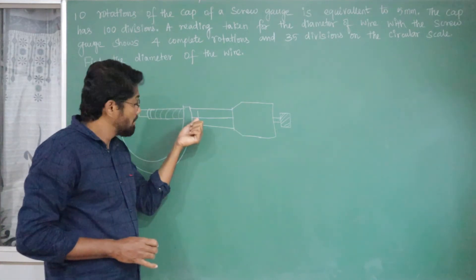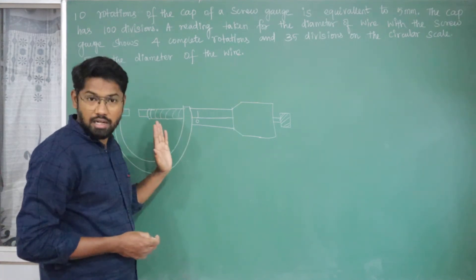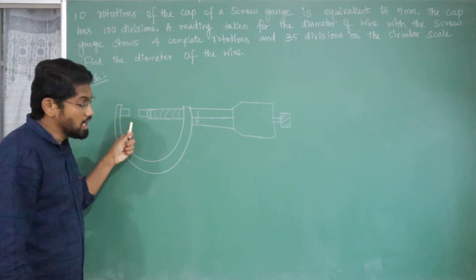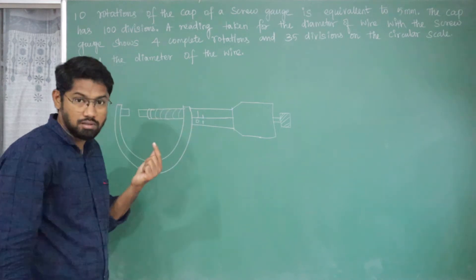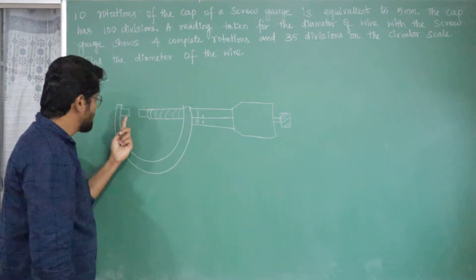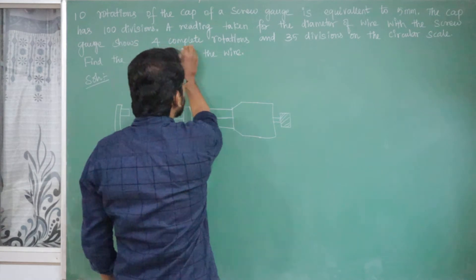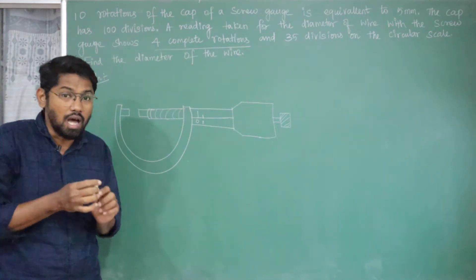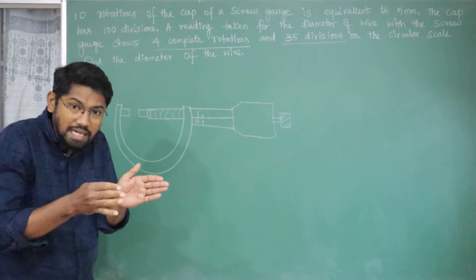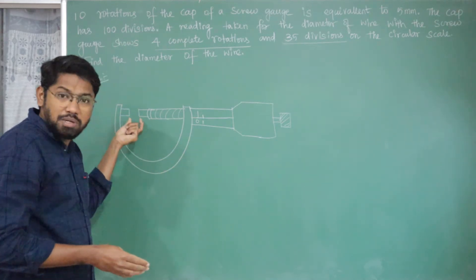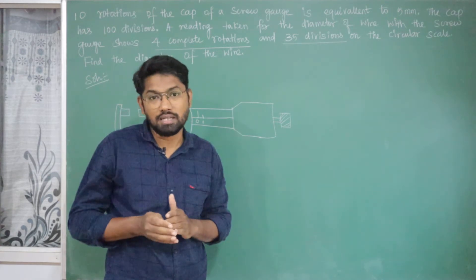The zero of the pitch scale and zero of the circular scale — the baseline — coincide. There is no zero error. We place the wire between the stud and spindle and rotate the circular scale anticlockwise. One complete rotation moves one division on the pitch scale. We count: 1, 2, 3, 4 — four complete rotations. But there is still a gap; no wire is placed yet. We have to move further 35 divisions on the circular scale. So 4 complete rotations plus 35 extra divisions represents the diameter of the wire.